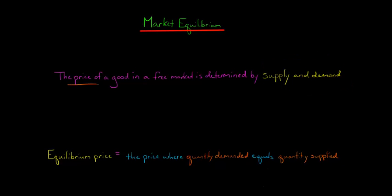So that price that we reach by the forces of supply and demand, we're going to call it the equilibrium price. And that's the price where the quantity of the good demanded is equal to the quantity supplied.